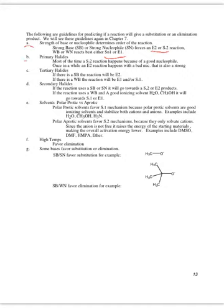Primary halides are primarily going to be SN2 reactions, unless you have a strong base that is a very bad nucleophile. Tertiary halides with a strong base are E2; with a weak base, they will be either E1 or SN1.